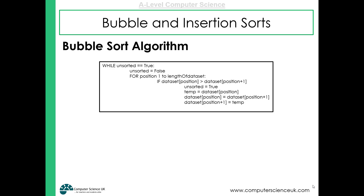Here we have the bubble sort algorithm in pseudocode. We begin with a while loop that we enter whilst 'unsorted' is true — in other words, the data set hasn't yet been sorted. We then change our flag variable to false, assuming that after this pass the data has been sorted so we can exit the while loop. We can change that flag back to true if we need to make a swap. We then enter a for loop that cycles through each item of our array from position one to the end of the data set.